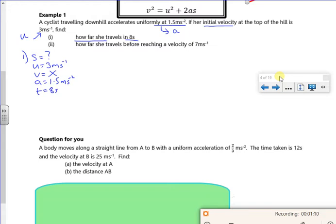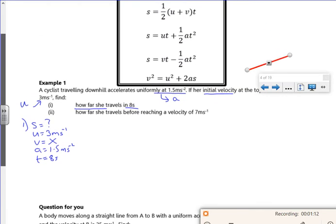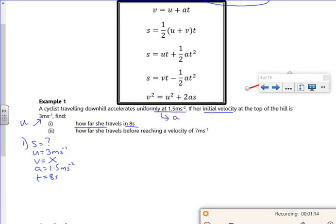The way I choose, I've got 5 equations here. The way I choose this one is based on the bit that I don't have or don't care about. I don't care about V, so I choose the equation without V. So if I look down the equations, the top one's got a V in it, the second one's got a V in it, and the third one hasn't got a V in it.